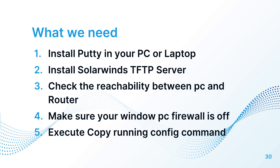So what we need to do: we need to install PuTTY on your laptop. We will install SolarWinds TFTP server, the free version. We will check the reachability between the PC and the router, and we will make sure that your PC firewall is off, because if it is on, sometimes the TFTP will not work. Then we will execute the running config command.